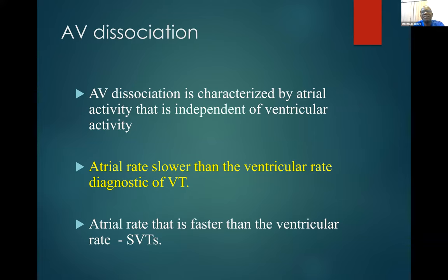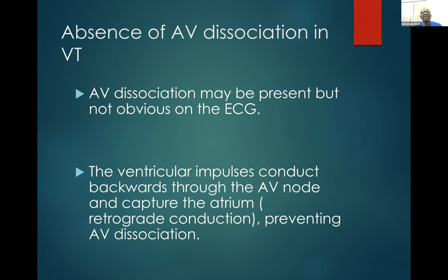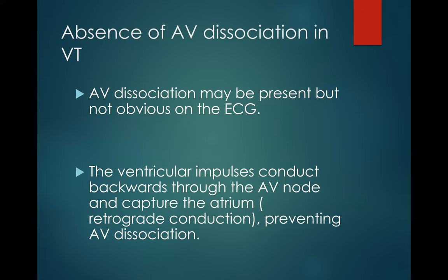AV dissociation is characterized by atrial activity that is independent of ventricular activity. An atrial rate slower than ventricular rate is diagnostic of ventricular tachycardia. An atrial rate faster than ventricular rate is diagnostic of supraventricular tachycardia. Absence of AV dissociation on ECG does not rule out VT — the ventricular impulse may conduct backward through the AV node and capture the atrium via retrograde conduction, thereby preventing visible AV dissociation.